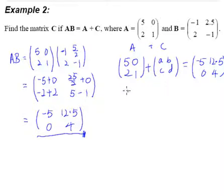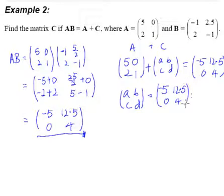To find matrix C, we simply take negative 5, 12.5, 0, 4 minus matrix A.